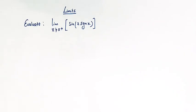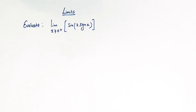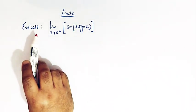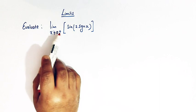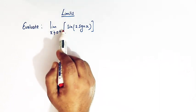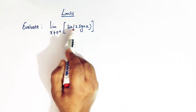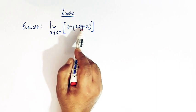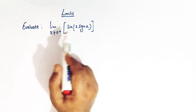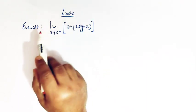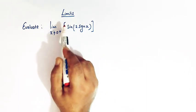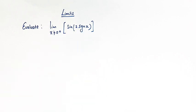Hello viewers. In today's class we are going to discuss one important and conceptual problem from limits. Here we have to find the value of this limit, that is limit x tends to 0 positive, and here we have the greatest integer of sine of 2 times signum of x. So here we have to find the value of this limit involving the greatest integer function and the signum function.